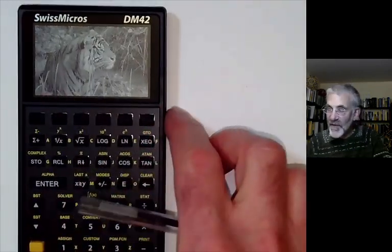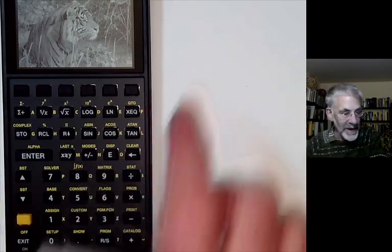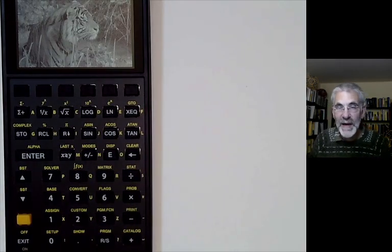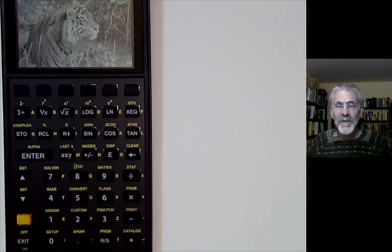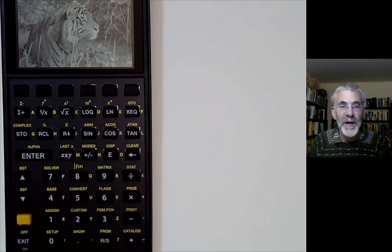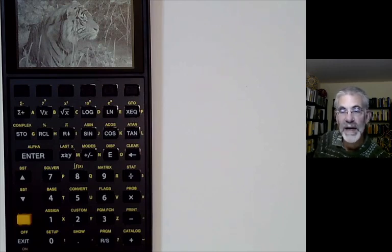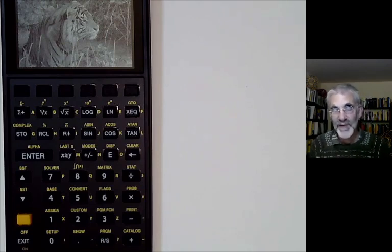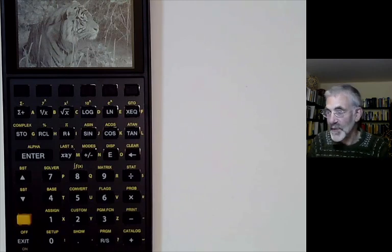The next calculator I have is this Swiss Micros DM42. Swiss Micros are a small Swiss computer company that makes clones of old HP calculators. This is a clone of the HP42. People stopped making HP42s about 30 years ago, and you may wonder why on earth would anybody make a clone of a 30-year-old calculator. If you go to eBay and try and buy a second-hand HP42 calculator, you will find they're going for $200 to $300, which is two or three times as much as a top-end modern graphing calculator. That's how good the HP42 was.